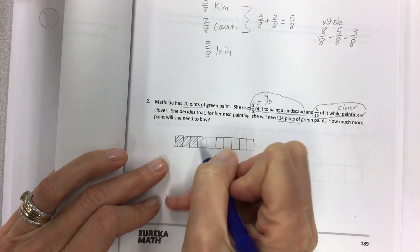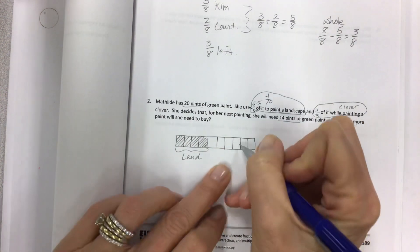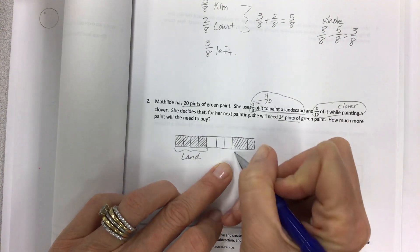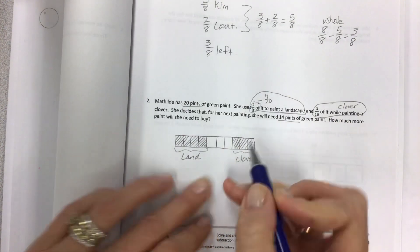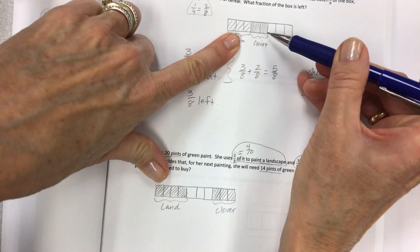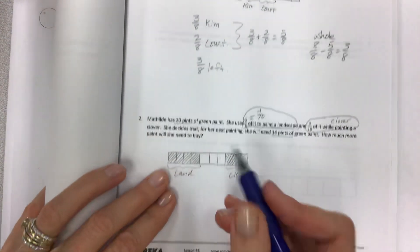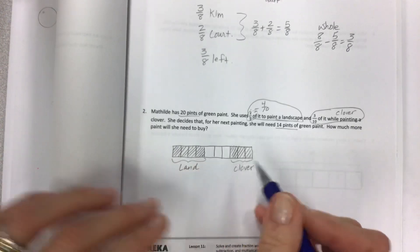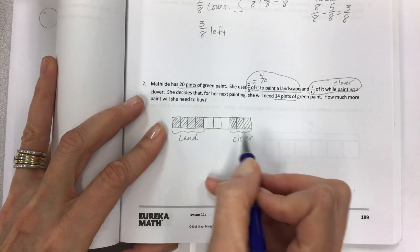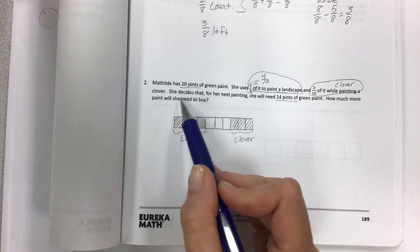And three-tenths for the clover. I wish it was all in the same line so I could circle it. Land. Sometimes I'll separate it. Clover. And it doesn't really matter where you shade it, but what you're looking for is what's left.